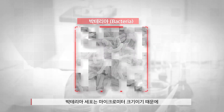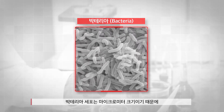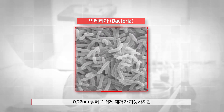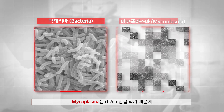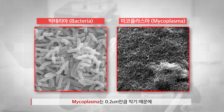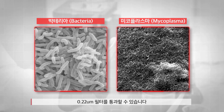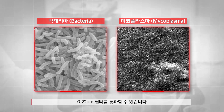The two most common contamination sources are bacterial contamination and mycoplasma contamination. The main difference between the two is their sizes. Bacterial cells are several micrometers in size and can be easily removed using 0.22 micrometer filters such as this one.